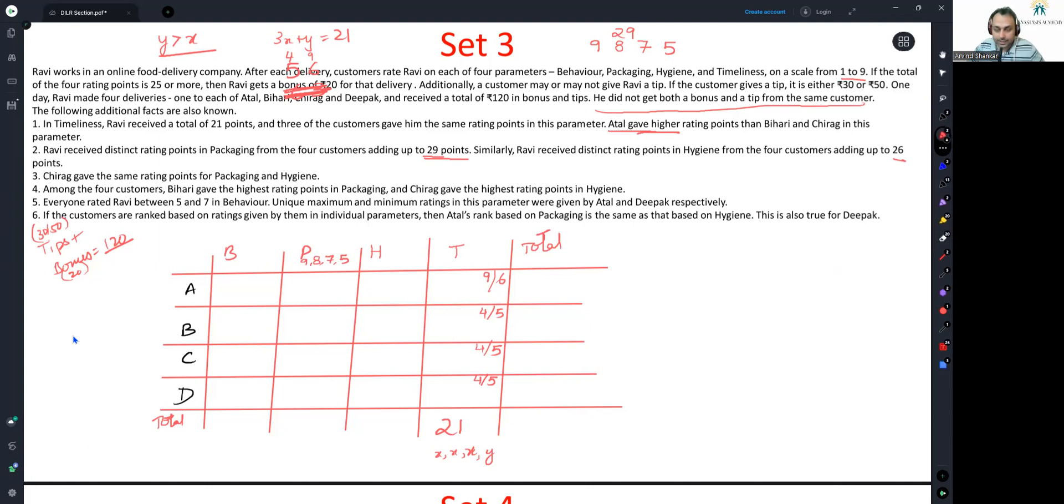It is more interesting when it comes to hygiene. Ravi received distinct rating points in hygiene from 4 customers, adding up to 26 points. Let us do the work again. I am saying the first case would be 9, 8, 7 and 2. This would be the absolutely extreme case. The top 3 have given the highest and then these 2 are interacting. So next 9, 8, 6, 3 or 9, 8, 5, 4. All cases with 9, 8 are covered.